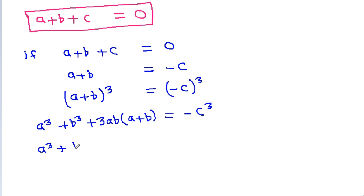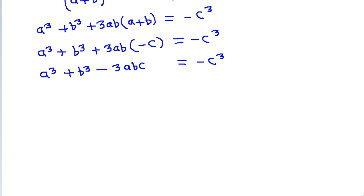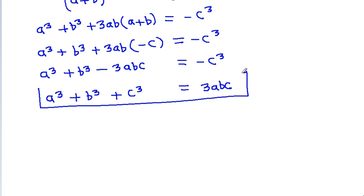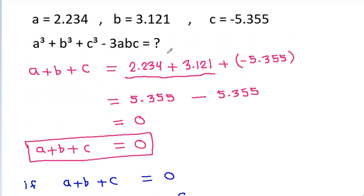And since a plus b is equal to minus c, substituting gives a cube plus b cube plus 3ab times (minus c) is equal to minus c cube. So a cube plus b cube plus c cube minus 3abc is equal to 0.